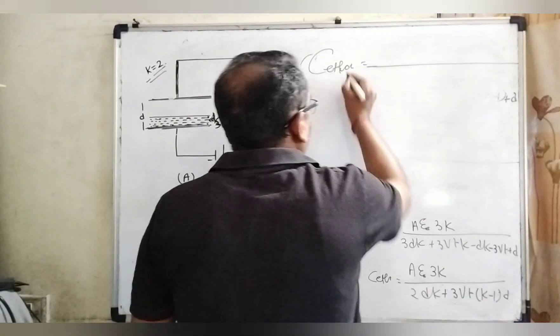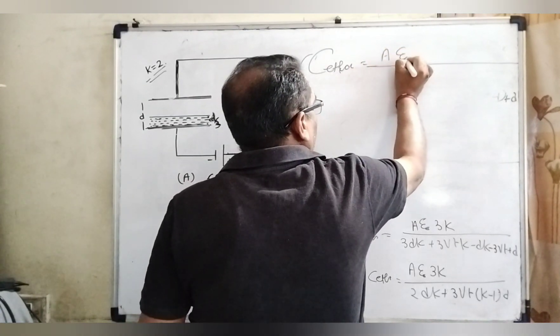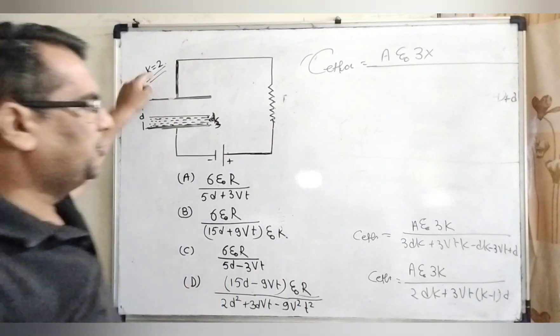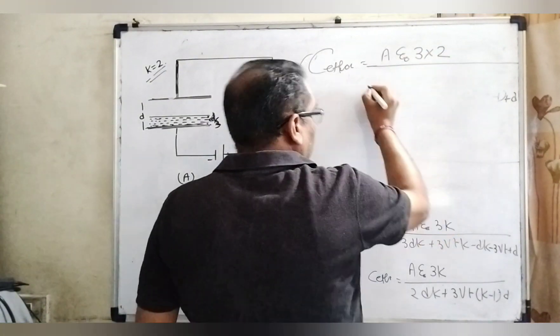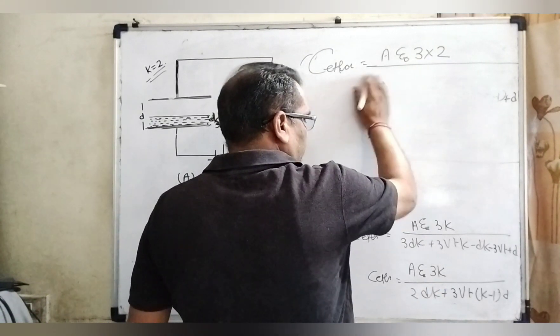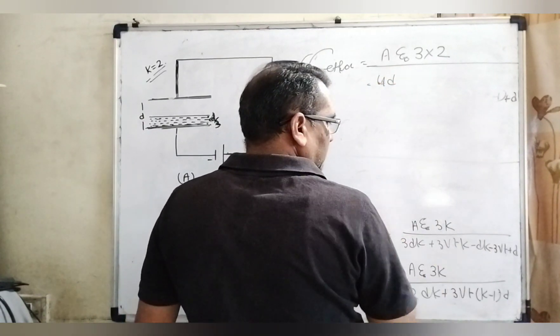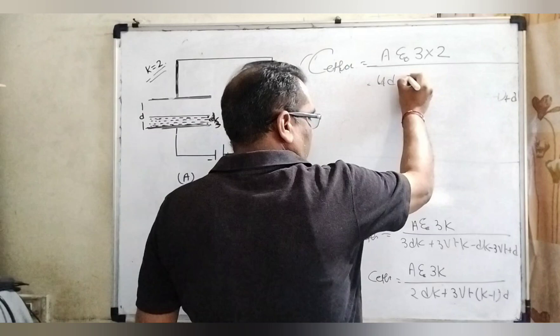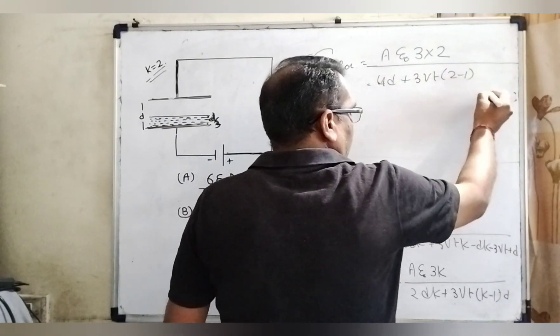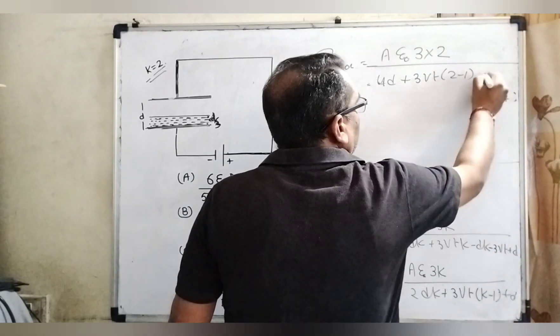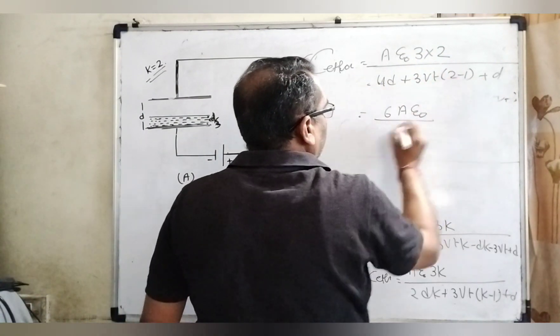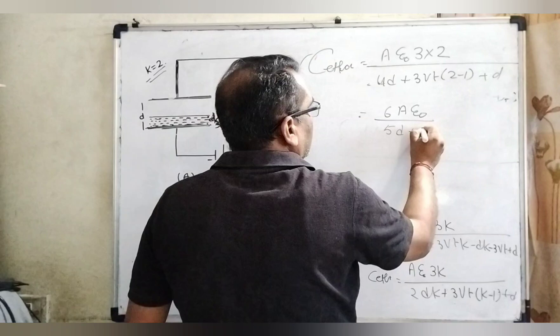Now, effective capacitance equals A epsilon 0 times 3 and what is the value of k? k is given 2. So 2 times 2d equals 4d and plus 3Vt times 2 minus 1 plus d. Here 3 goes to 6, A epsilon 0 over 4d and d equals 5d and 3Vt.